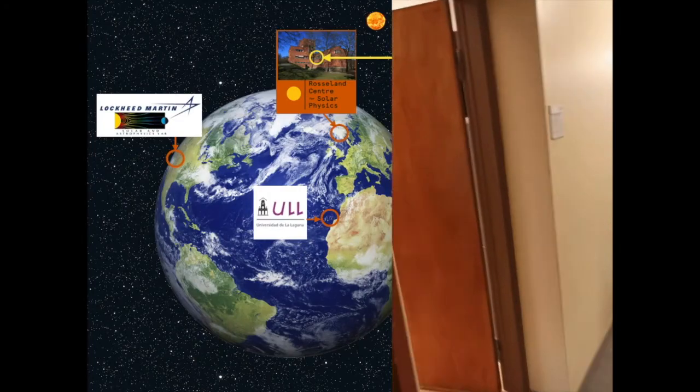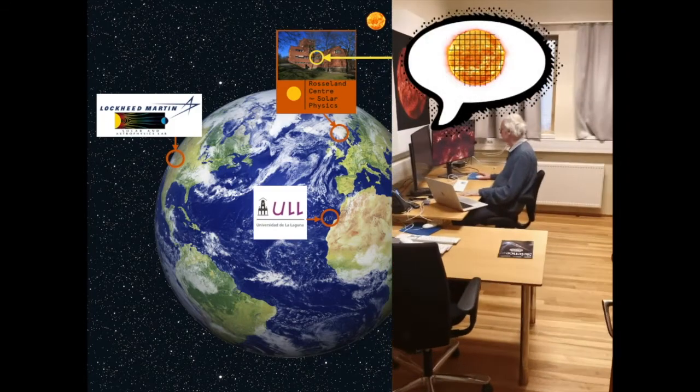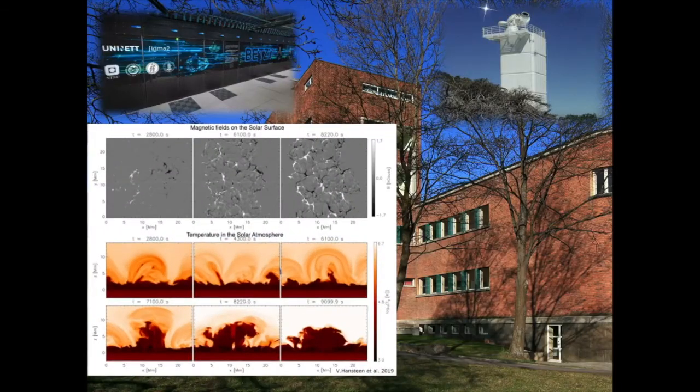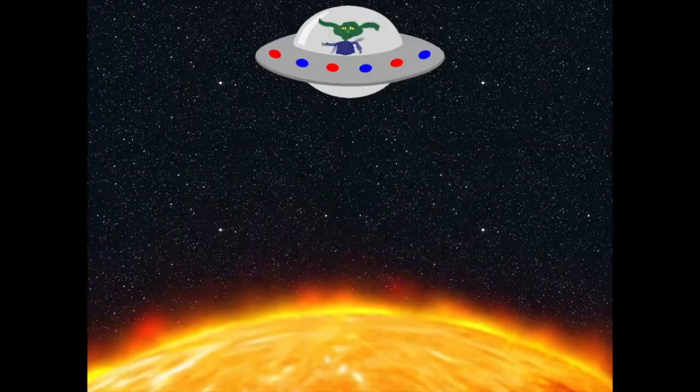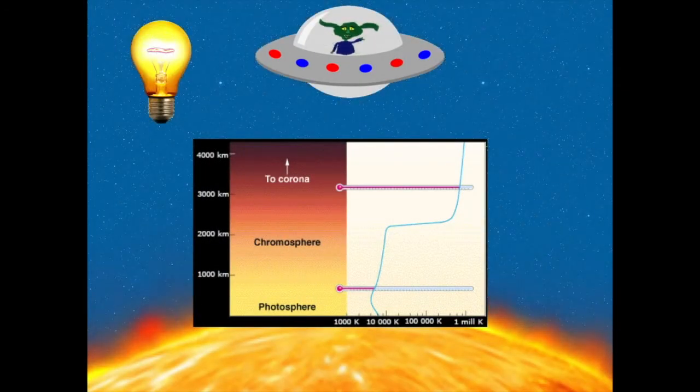Also, solar scientists around the world use their computers to simulate the sun. By comparing simulations with observations, we come closer to solving the mystery of the extremely hot corona.